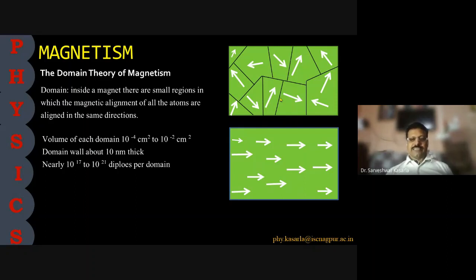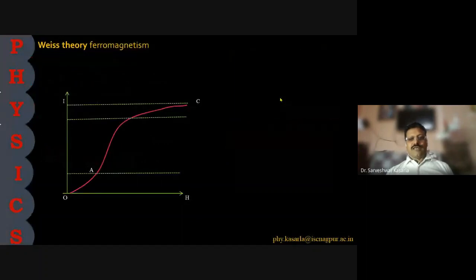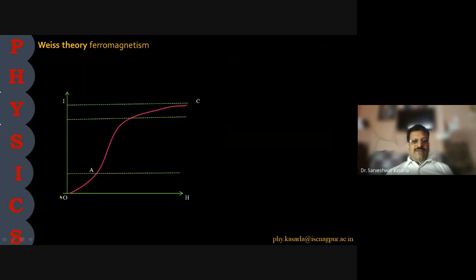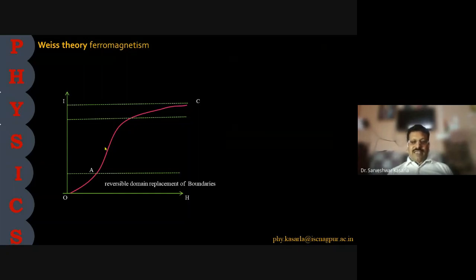They couple together to get magnetization in a particular direction. Initially, along the magnetization curve, we can divide it into three regions. For region OA, where the magnetic field is very low, there is reversible domain replacement of boundaries — the boundaries are replaced but the process is reversible. If the external magnetic field is further increased, the second stage occurs: irreversible domain replacement of boundaries.